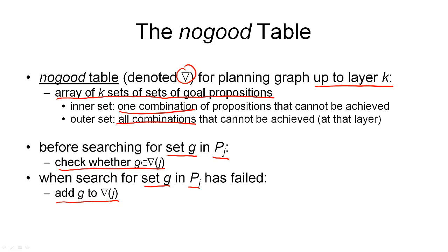So the mutex relation for each proposition layer gives us pairs of propositions that cannot be achieved together. The nogood table goes further as it gives us sets of propositions that cannot be achieved together in this proposition layer.